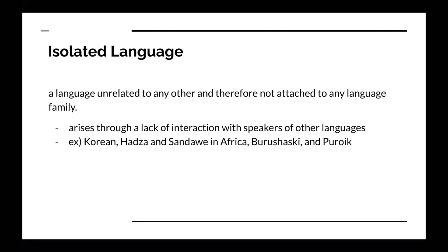Lastly, there is isolated language. Isolated language is a language unrelated to any other and therefore not attached to any language family. These arise through a lack of interaction with speakers of other languages. Examples include Korean, Hadza and Sandawe in Africa, Burushaski, and Poroik. Those are all the types of languages covered in the chapter on classifying languages. I hope this helped you guys out. Thank you for listening.